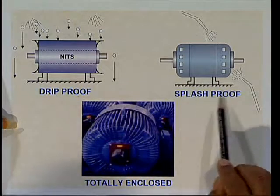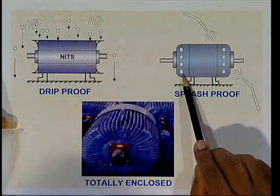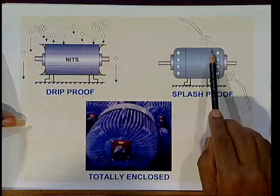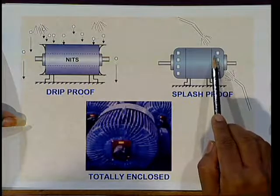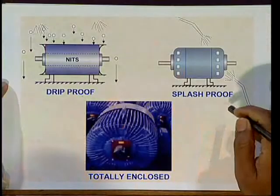In the splash proof type enclosure, the openings are designed such that any solid particles or water particles at an angle between vertical to 100 degrees cannot enter into the motor. For example, if you have a vertical surface at 90 degrees, the openings are designed so that at 100 degrees, any water particles do not enter the motor. This type is called a splash proof enclosure type motor.